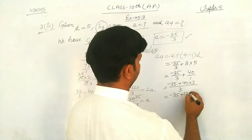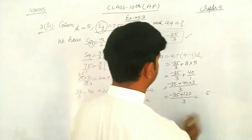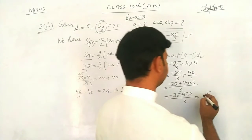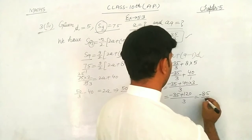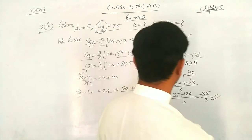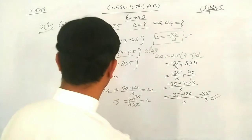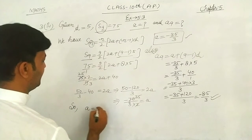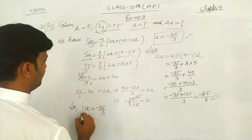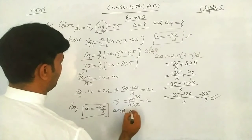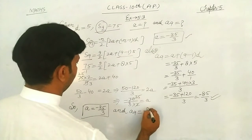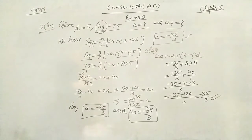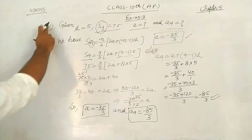Taking LCM of 3: (negative 35 plus 120) over 3 equals 85 over 3. So a9 equals 85 over 3. To summarize: a equals negative 35 over 3 and a9 equals 85 over 3.